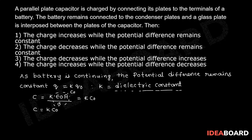So C equals K C₀. Therefore, Q equals CV, which equals K C₀ into V₀. Therefore, Q equals K Q₀, since Q₀ is nothing but C₀ V₀.